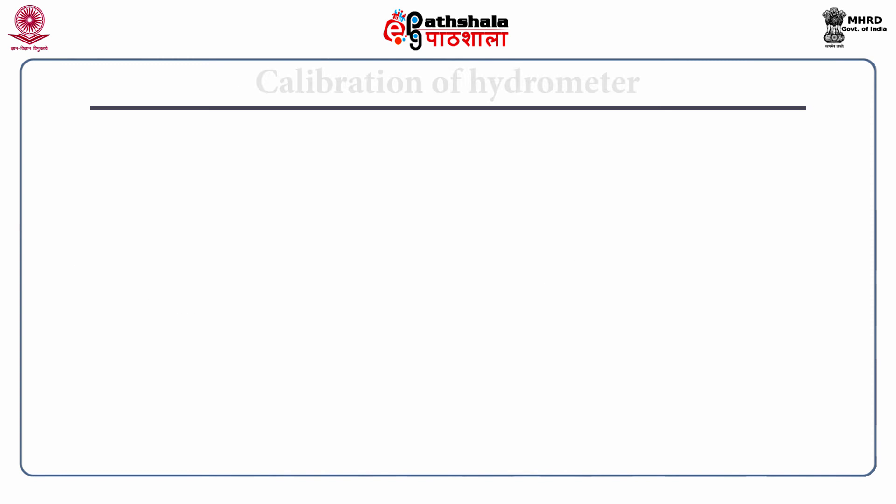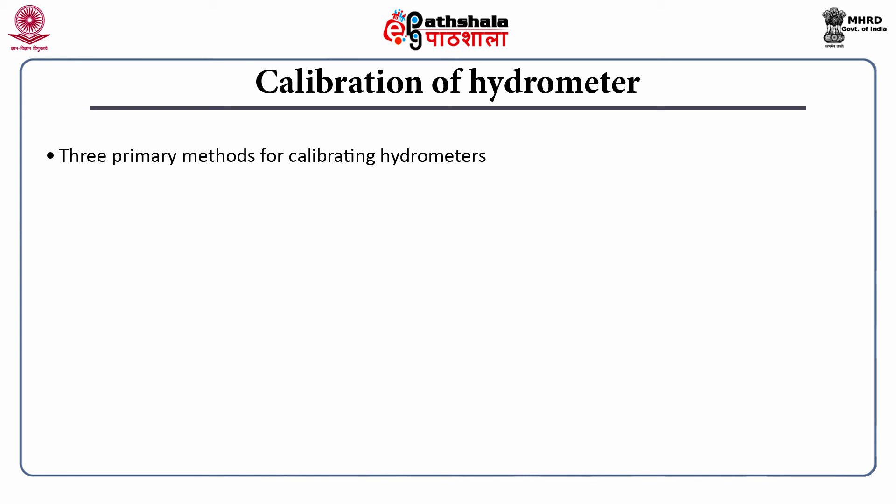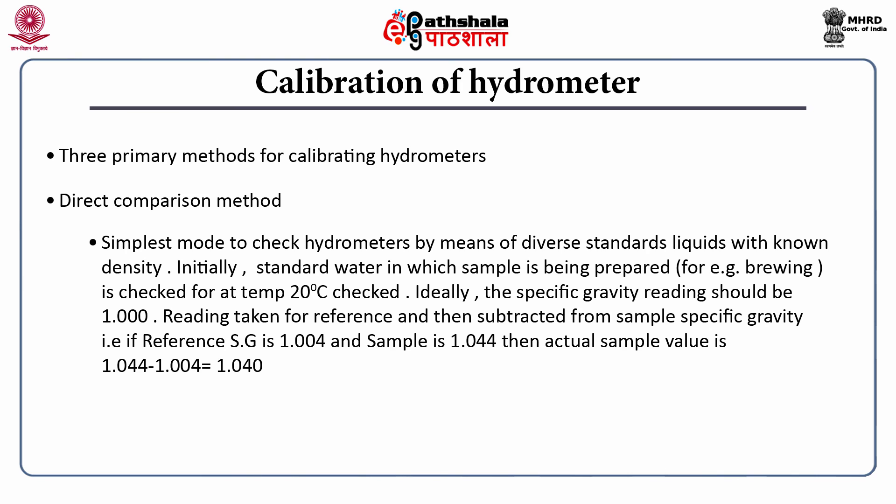Coming to various methodologies for calibration of hydrometer, there are three primary methods. The first is the direct comparison method, which is the simplest — checking hydrometers using a standard liquid with known density. This is generally done with standard water first. If you are in the alcohol industry, the basic standard water is checked at 20°C. Ideally, the specific gravity reading should be 1 at 20°C. The reading taken for reference is then subtracted from the sample specific gravity.